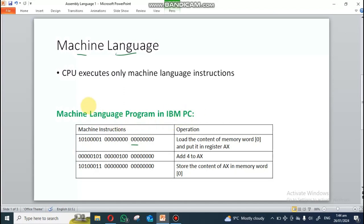It is definitely going to be difficult to understand or remember these things. I've given an example here - I've written a machine language program in IBM PC which contains these three lines. If you see these three streams of bits, I've also tried to explain them using descriptive words. The first bit stream contains almost 24 bits. The purpose of this first bit stream is to simply load some content from memory word zero to the accumulator register.